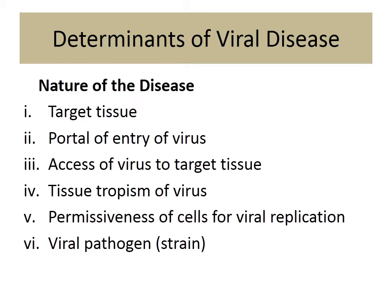Tissue tropism refers to affinity — some viruses come equipped with specific receptors. For example, influenza uses hemagglutinin, and HIV's gp120 attaches to CD4 receptors. Most of our cells are permissive and cannot refuse when a virus knocks at the door. Pathogenicity also varies by strain — influenza C is not as bad as influenza A, and the common cold virus is less severe than influenza A.